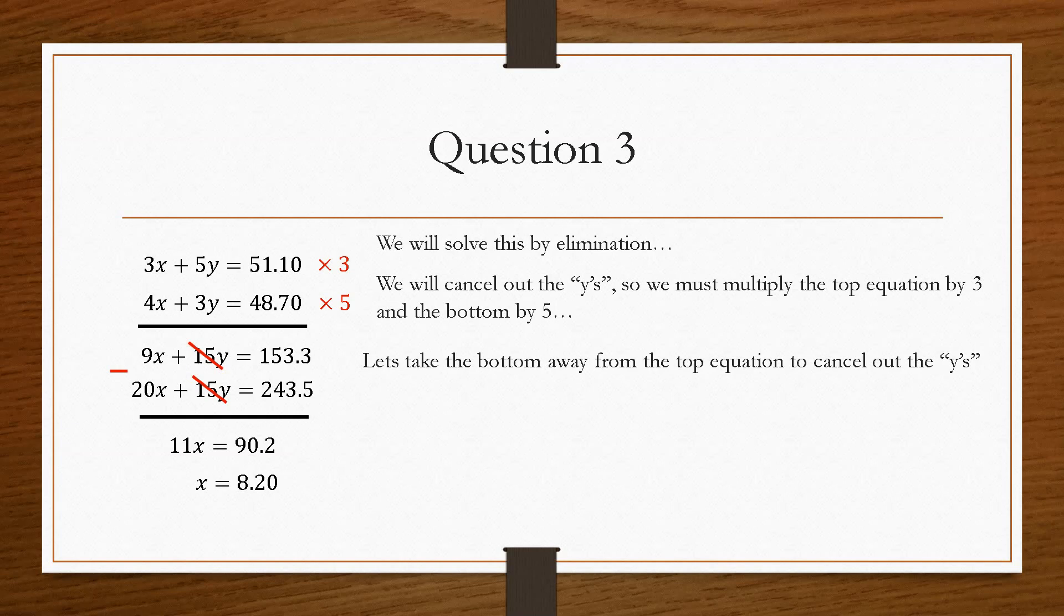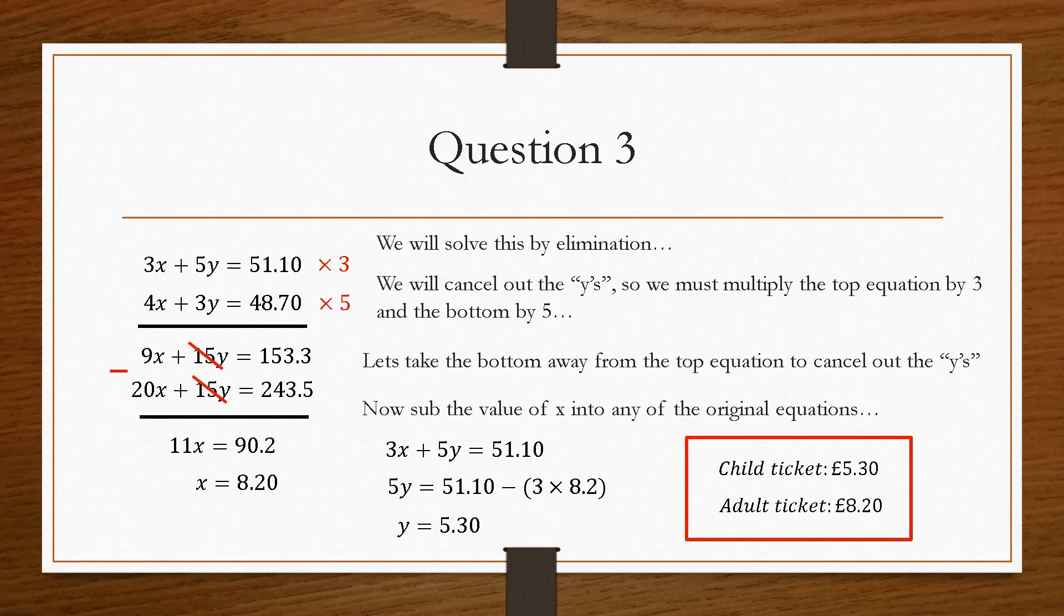So that is the cost of an adult ticket. And now we substitute in the value of x into any of the original equations. So you don't have to do these because these numbers are just a scale-up. We can do the original equation. And you can pick either one you want. I'll go for the 3x plus 5y equals 51.10. We'll substitute in and bring across the 3x. And that will give us y is equal to £5.30. So a child's ticket is £5.30 and an adult ticket is £8.20. And that's how you would go about solving the different types of simultaneous equations either through elimination or substitution.